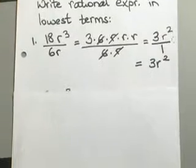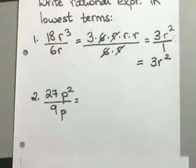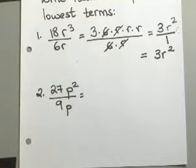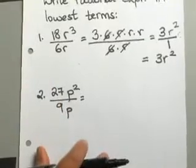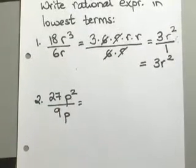Let's look at another example here. You have 27p square over 9p. You want to do almost a similar kind of thing that you did in the first example. Go ahead and break these down.